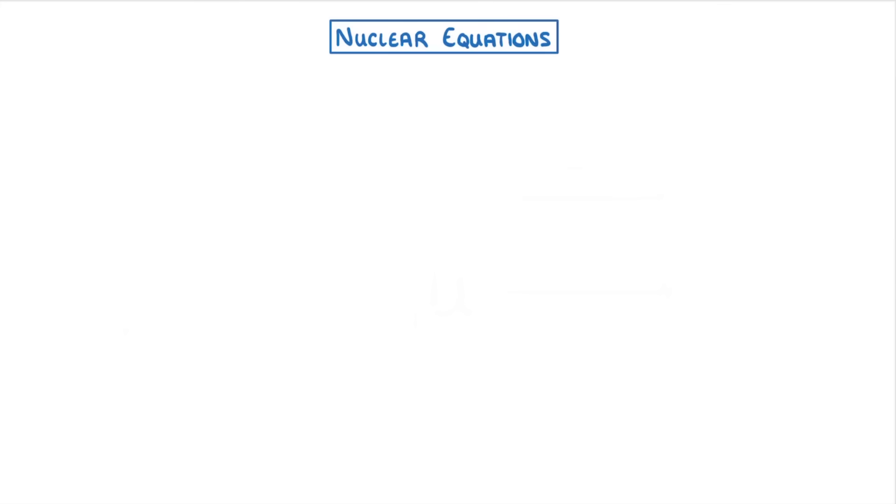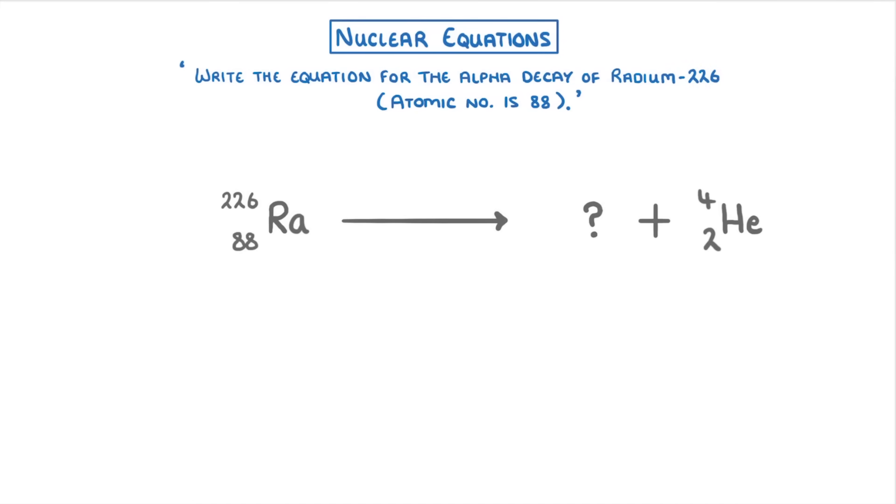So if we had a question that asked us to write the equation for the alpha decay of radium-226, which has an atomic number of 88, we would start with our radium-226 and draw an arrow to our unknown decay product and our alpha particle, which we write as a helium nucleus.